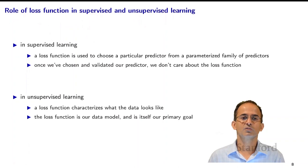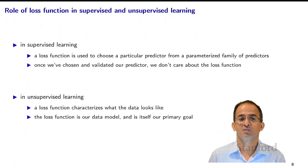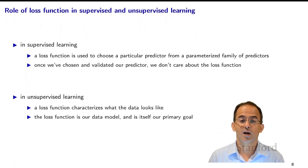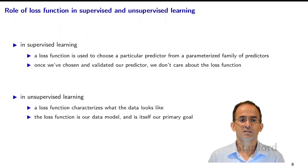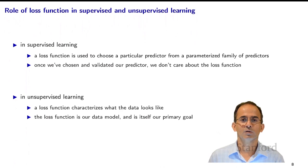It's worth noting the different roles of the loss function in supervised versus unsupervised learning. In supervised learning, the loss function is used to choose a predictor from a family parameterized by theta — once chosen, we no longer care about it; the predictor is the model. In unsupervised learning, the loss function plays a different role: it actually is the data model. Getting the loss function is the primary goal of unsupervised learning.